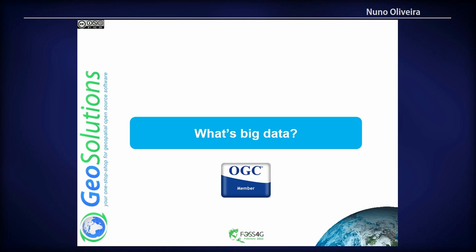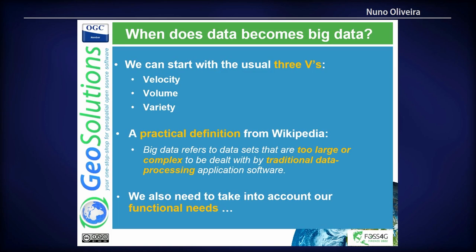I'll start by discussing what big data is. The typical definition is the trivia: a lot of data coming in very fast with a lot of variation. But in practical terms this doesn't necessarily mean we need big data technologies. I prefer the practical Wikipedia definition: big data is when the current system cannot handle it — that's when we need the big guns. We also need to consider what functionality we need and whether we really need to keep all the data we're receiving or only a portion of it. That will decide which type of technology to use.